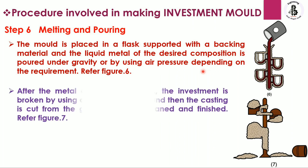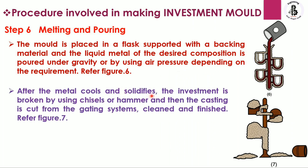After the metal cools and solidifies, the investment shell is broken using chisels or a hammer, and the casting is cut from the gating system, then cleaned and finished. All sand particles and investment material are removed to reveal the required shape and size of the metallic component. This is the complete method of the investment mold casting process.